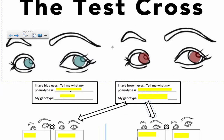So here we have two characters. They both look like women's eyes but one is supposed to be male and one's female. We don't really care which is which because it's not a sex-linked trait. This character has blue eyes - so phenotype is just your physical trait, so that's obviously blue eyes. The other has brown eyes, so that phenotype is obviously brown.